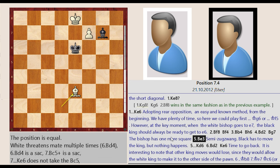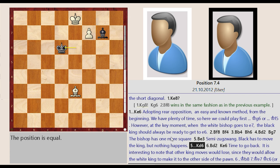has to move the king, but nothing happens. King E6 D6. Bishop E3 D2. King D6 E6.